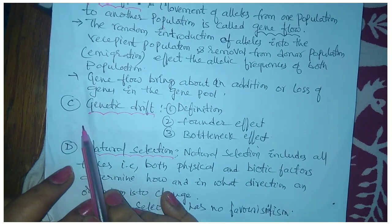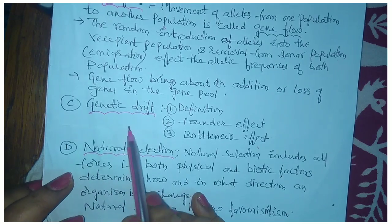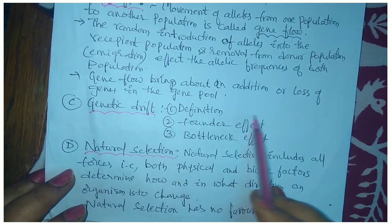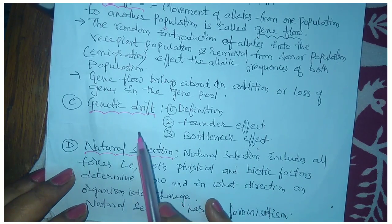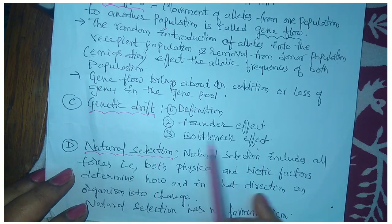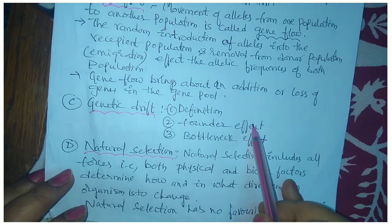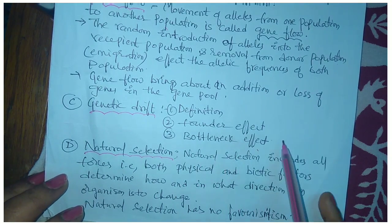The third one is genetic drift. There are two types: one is the founder effect and another one is the bottleneck effect.